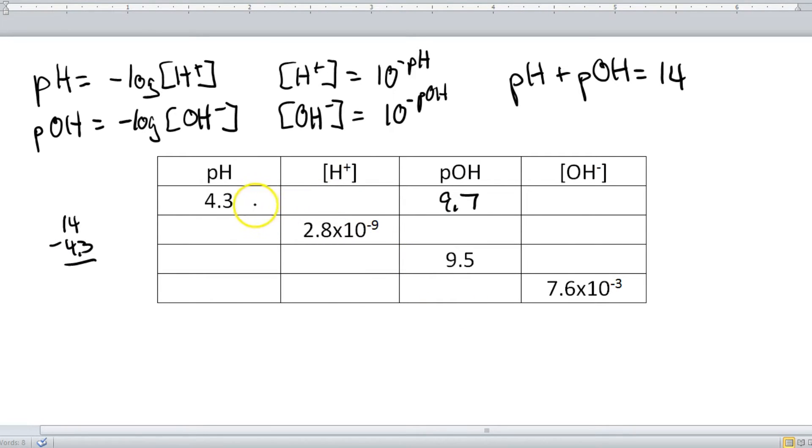Alright, now what we're going to do is we're going to take the pH and we're going to find the hydrogen concentration. So that is this formula right here which requires the use of the 10 to the x button on the calculator, which is usually paired up with the log button. So you'll do the second function and then 10 to the x.